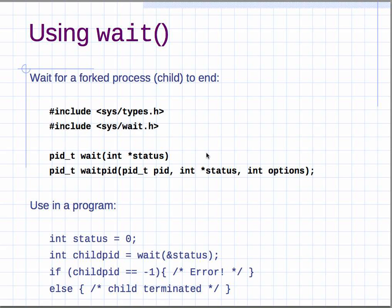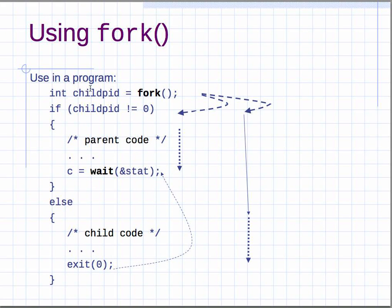We saw how fork works — it starts a new process called a child process. Typically, the parent process waits for the child to finish before moving on. When you call fork in a parent process, the return value will be different in the parent versus the child. You can think of it as two lines of execution. The parent executes the parent code — to check which part you're in, you check the return value of fork.